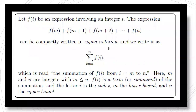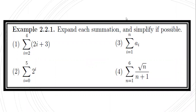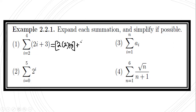Let's have an example. We will expand this sigma notation. The first one is the summation of (2i + 3) where i ranges from 2 to 4. We perform it starting from i = 2, so the first term is 2×2 + 3. Next, i = 3 gives 2×3 + 3. Lastly, i = 4 gives 2×4 + 3.